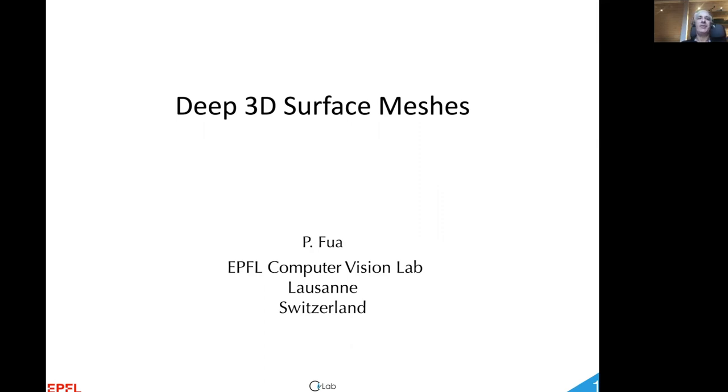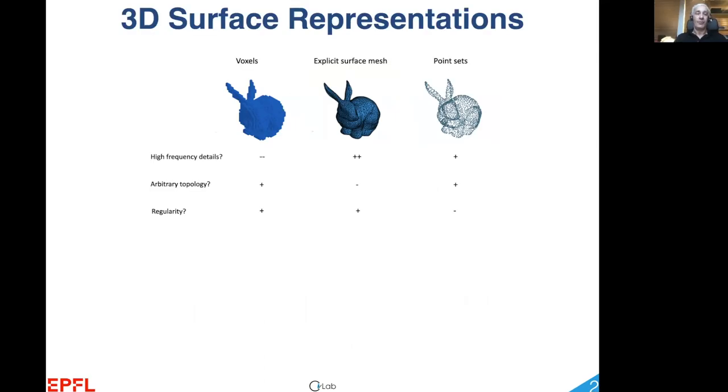Given that there are many kinds of surface representations that may be easier to incorporate into a deep learning pipeline, surfaces can be voxelized, represented by point clouds, or by triangulated meshes. All these representations have their pluses and minuses.